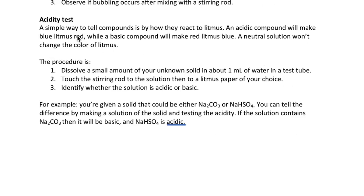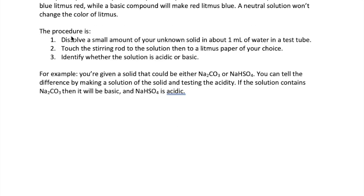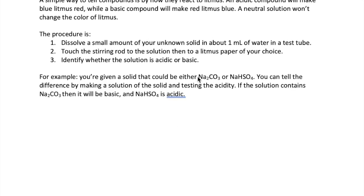The last test is one of the simplest tests, which is to test for acidity. You've learned that some compounds are acidic and some are basic. If you make a solution of your solid and then test for its acidity using litmus, this can quickly tell you which compound you have. For example, let's say you have a solid that could be either sodium carbonate or sodium hydrogen sulfate. The acidity test would be appropriate because carbonate is basic and hydrogen sulfate is acidic. So if you have carbonate, the red litmus paper will turn blue, while if you have hydrogen sulfate, the blue litmus will turn red.